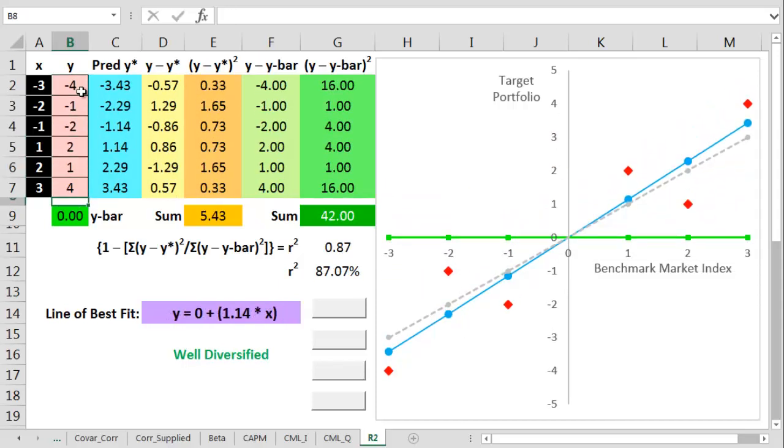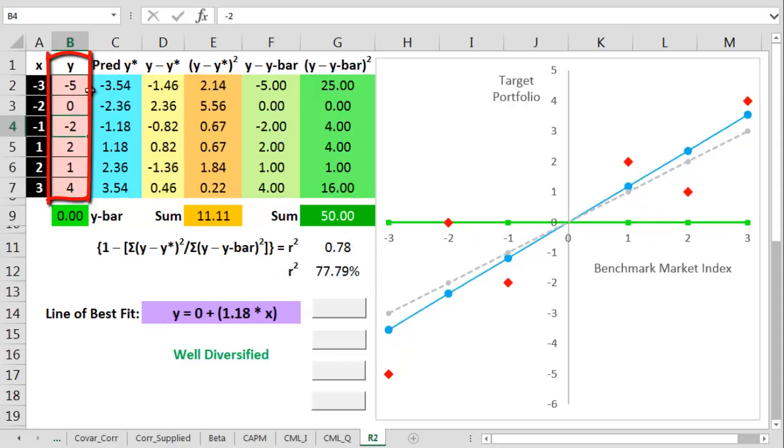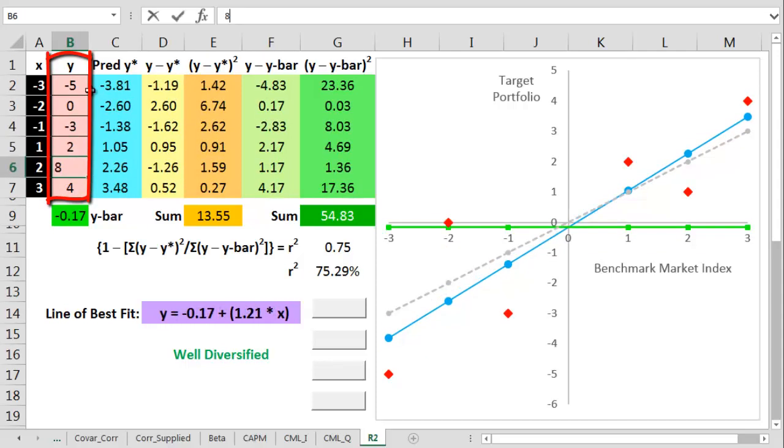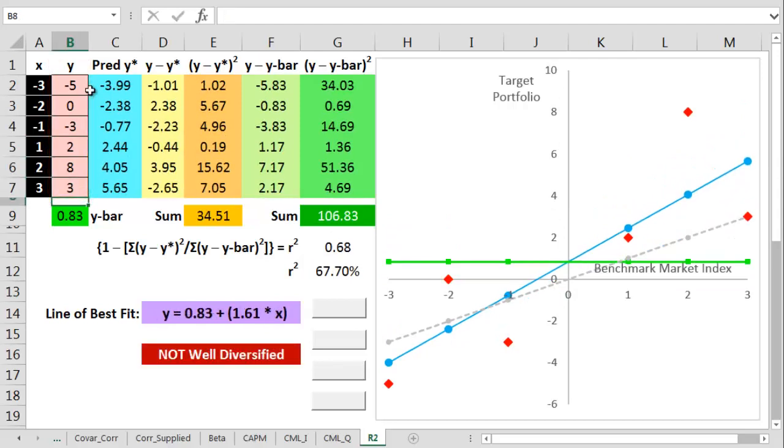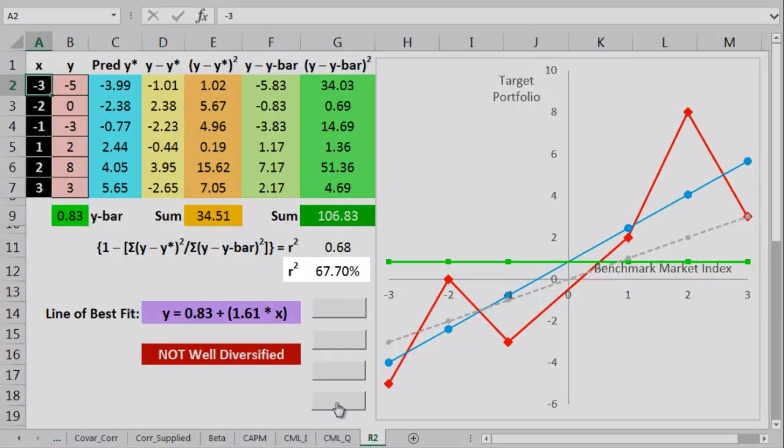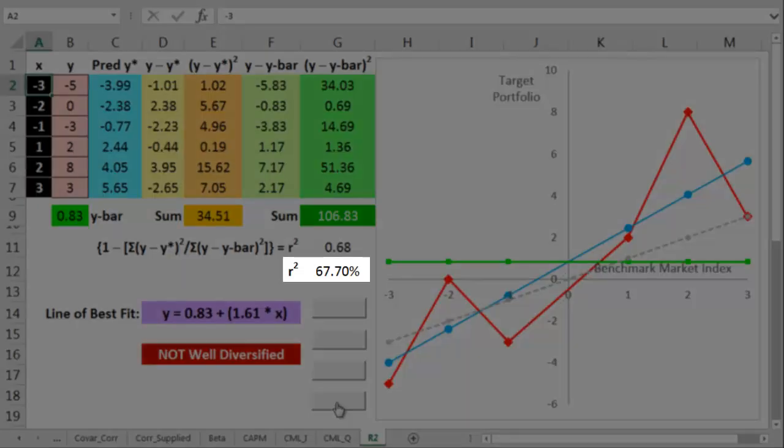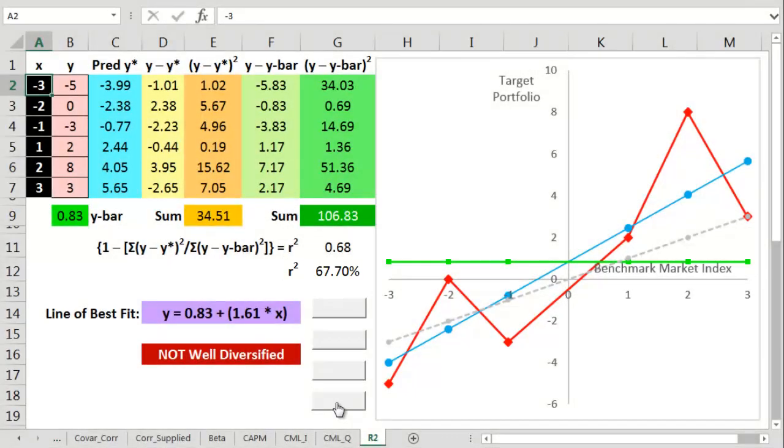Now I'll try to get an r squared figure of less than 70%. I'm going to gradually make all the actual points less and less like the predicted values on the line. Now you can see that though the line of best fit is trying real hard, it's not predicting well anymore. And now we've got an r squared figure of less than 70%. It's not well diversified.